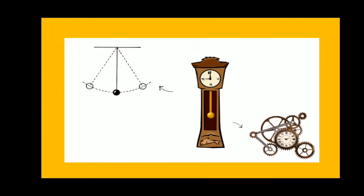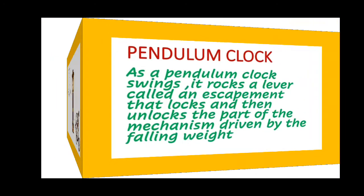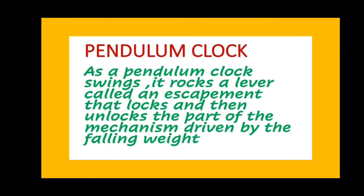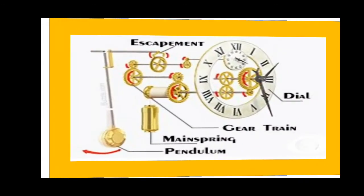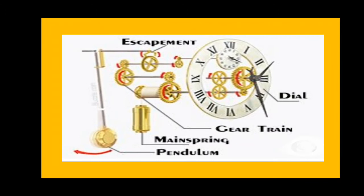Can you identify this picture? Exactly, it's a pendulum. So what is a pendulum clock? A pendulum clock is a kind of mechanical clock. As a pendulum swings, it rocks the lever called an escapement that locks and unlocks the part of the mechanism driven by the falling weight.